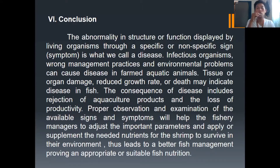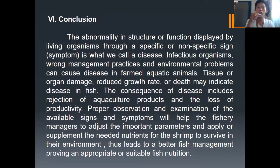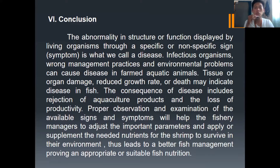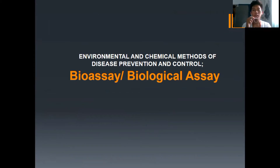For conclusion, the abnormality in structure or function displayed by living organisms through specific or non-specific signs or symptoms is what we call a disease. Infectious organisms, wrong management practices, and environmental problems can cause disease in farm aquatic animals; tissue or organ damage, reduced growth rate, or death may indicate disease in fish and crustaceans. The consequence of disease includes rejection of aquaculture products and the loss of productivity. Proper observation and examination of available signs and symptoms will help fishery managers adjust important parameters and apply or supplement needed nutrients for the shrimp to survive. Another part of this topic is environmental and chemical methods of disease prevention and control, highlighting the bioassay or biological assay.